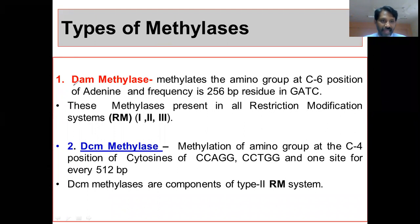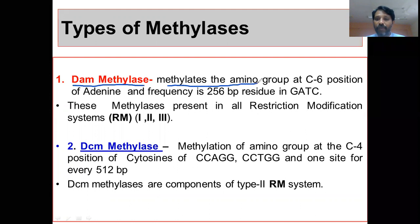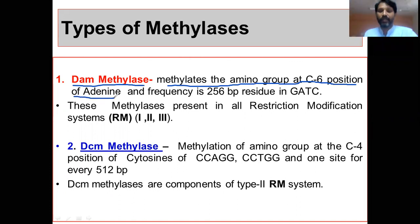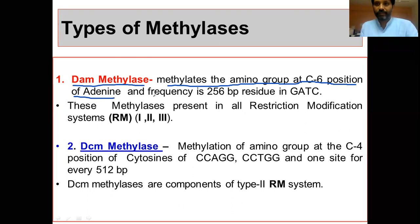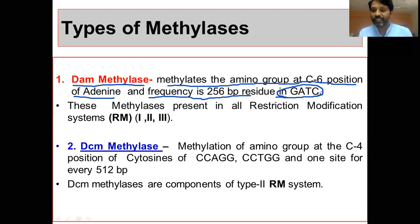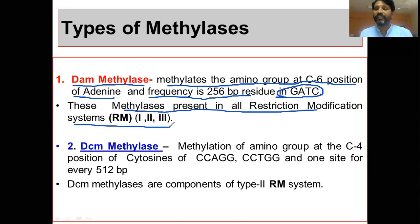DAM methylases methylate the amino group at the C-6 position of adenine. The frequency is every 256 base pairs. They are also site-specific — DAM methylases are site-specific, meaning they methylate at the sequence G-A-T-C, where the A (adenine) is methylated. These methylases are present in all restriction modification systems.